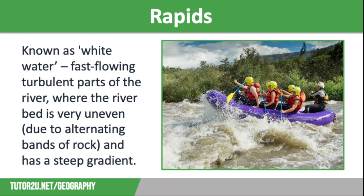The reason the riverbed is uneven is due to the alternating bands of rock. Soft rock is less resistant and erodes easily, lowering the riverbed, whereas hard rock is much more resistant, so it is left protruding up from the riverbed. As the water flows over these uneven sections, the river becomes more and more turbulent, which is great for white water rafting.